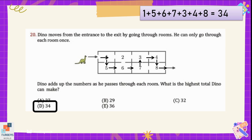34 is the greatest total because 36 would be the total if we included room 2 as well, but that is not possible — in that case he cannot exit from room number 8. So 34 is the greatest achievable total.